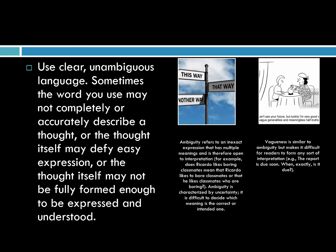They go on to say: use clear, unambiguous language. Ambiguity refers to an expression that has multiple meanings. Vagueness is similar to ambiguity but makes it difficult for readers to form any interpretation at all — for example, 'the report is due soon' when no one knows what that actually means. Sometimes the word you use may not accurately describe a thought, or the thought itself may not be fully formed. The key message is: know what you're saying and say it as easily as you can.